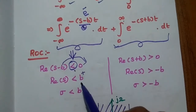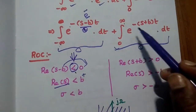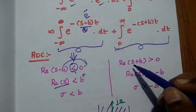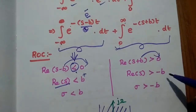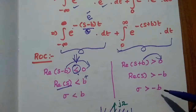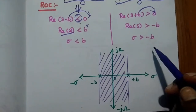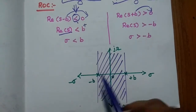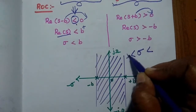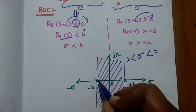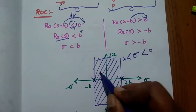The real part of S is sigma. For the positive side, sigma > −b. There are two conditions, so we consider both together. The sigma values should be in between −b and +b, that is, −b < sigma < +b. This is the region of convergence ROC. Within this region, the Laplace transform exists.